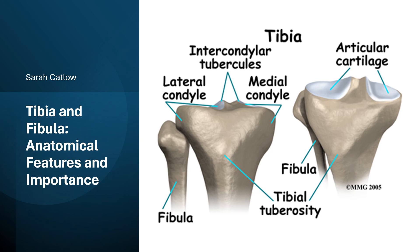We're going to look at the tibia and fibula bones now — their anatomical features and importance. The tibia and fibula are two long bones of the lower leg, located between the knee and the ankle. They play a really important role in supporting body weight, facilitating movement, and providing stability. While the tibia is the larger weight-bearing bone, the fibula is thinner and primarily serves as a stabiliser. Together they are important to both the knee and ankle joints.